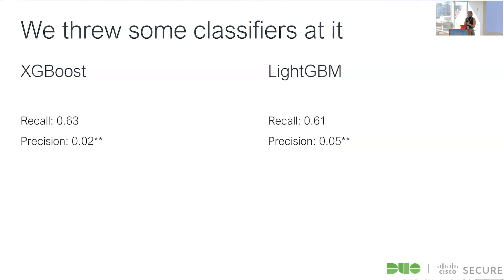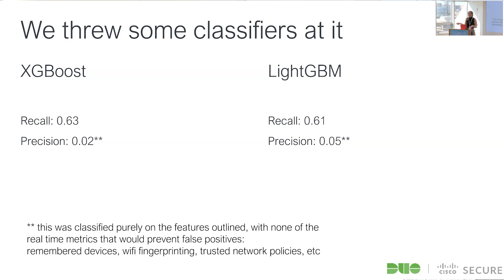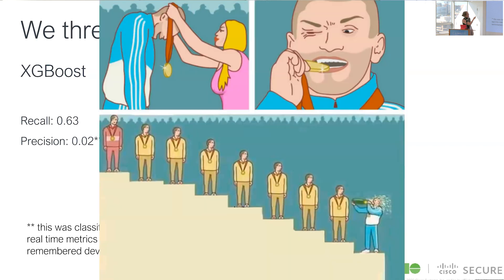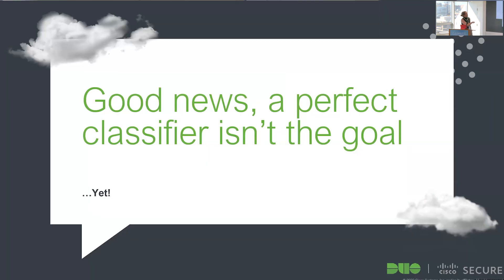We have a recall of about 0.6 to 0.7 depending on how we tune it, and we were tuning for recall because customers tell us they're not super sensitive to false positives — they'd rather catch more true positives. The precision numbers have asterisks: we have a huge base rate issue — billions of auths per month, maybe a dozen actually malicious. Also, these were evaluated only on the listed features, not on real-time signals like whether the auth came from a remembered device, a known Wi-Fi fingerprint, or a trusted network configured by the customer — all of which would improve precision.